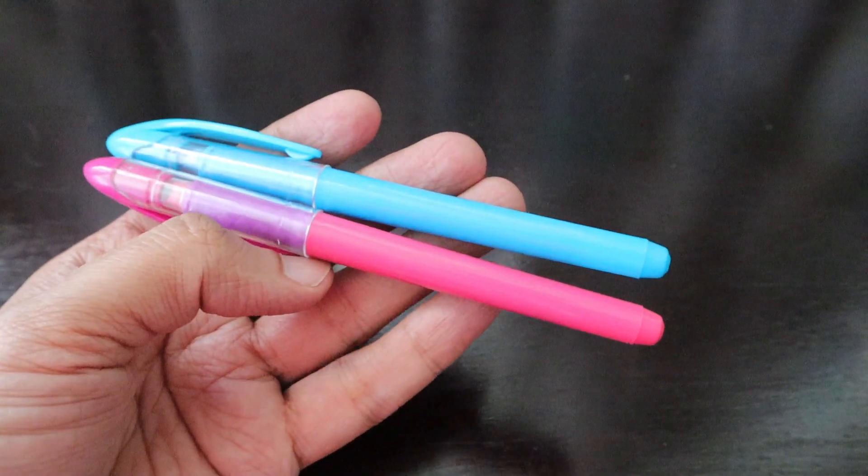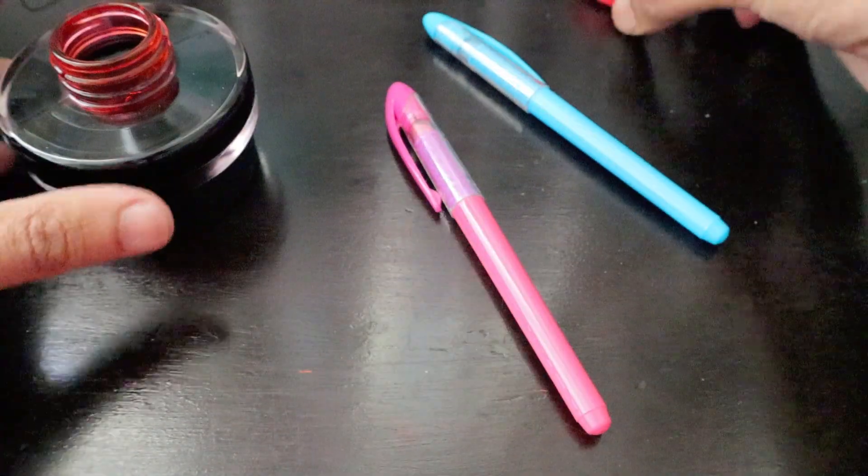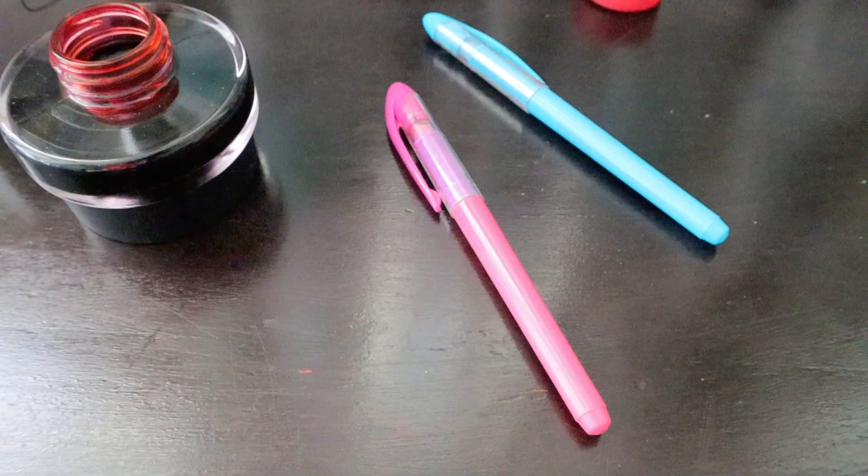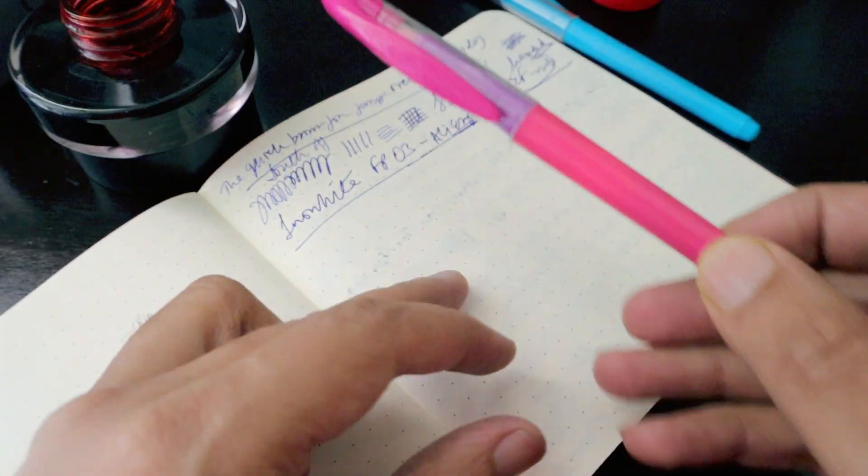For the pink pen we're going with the Lamy red ink that we recently bought. We're going to dip the pen into this one and then try to write in our journal. This is also a hooded nib.